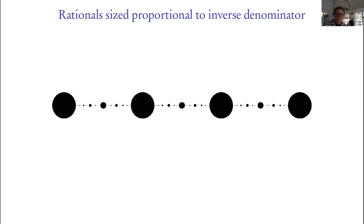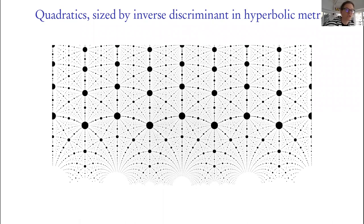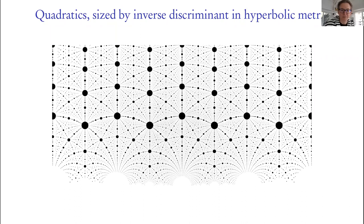There's a question from Andrew Granville: could you be precise about what numbers are being graphed? These are all the quadratic irrationals in the complex plane. I'm drawing the upper half plane, so these are the roots of quadratic polynomials with coefficients in Q — algebraic numbers of degree two.